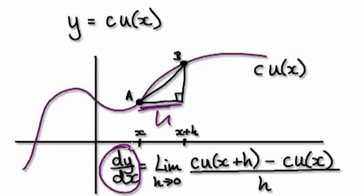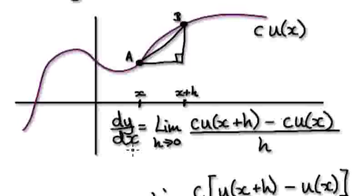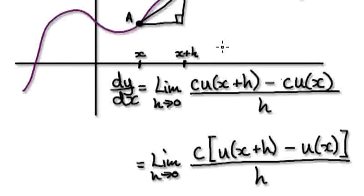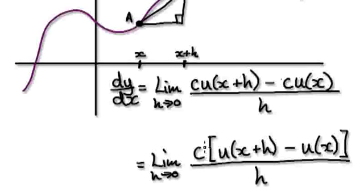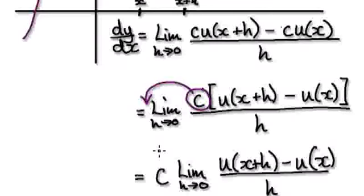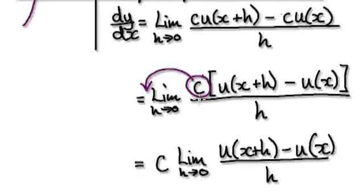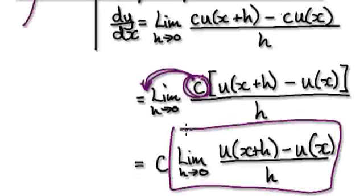That would then give you the true gradient. But the thing is, c is in common in both terms. So you can factor out the c, so it becomes c times [u(x+h) minus u(x)]. And then using one of the laws on limits, because c is a constant and c doesn't change, you can actually take the c out and then just concentrate on finding the limit of the remaining expression.